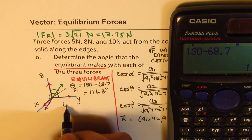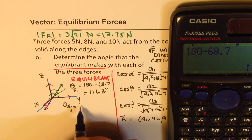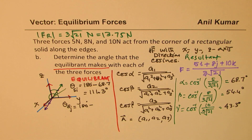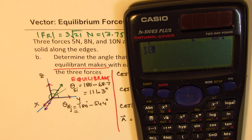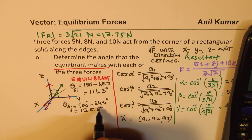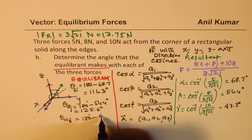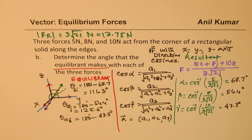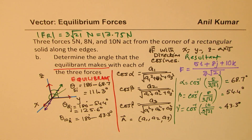The equilibrant angle with the 8 N force (along j) is 180° − 54.4° = 125.6°. The equilibrant angle with the 10 N force (along k) is 180° − 43.3° = 136.7°.